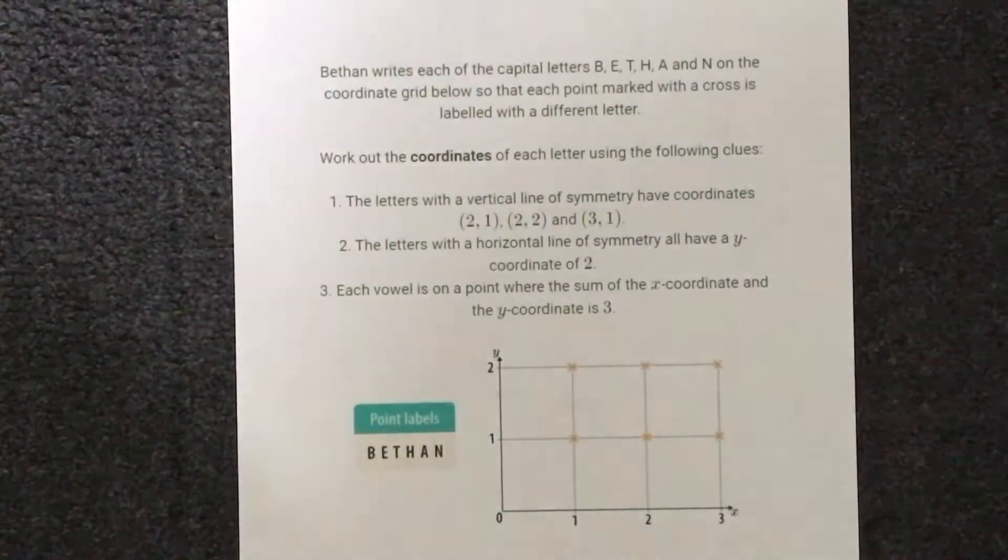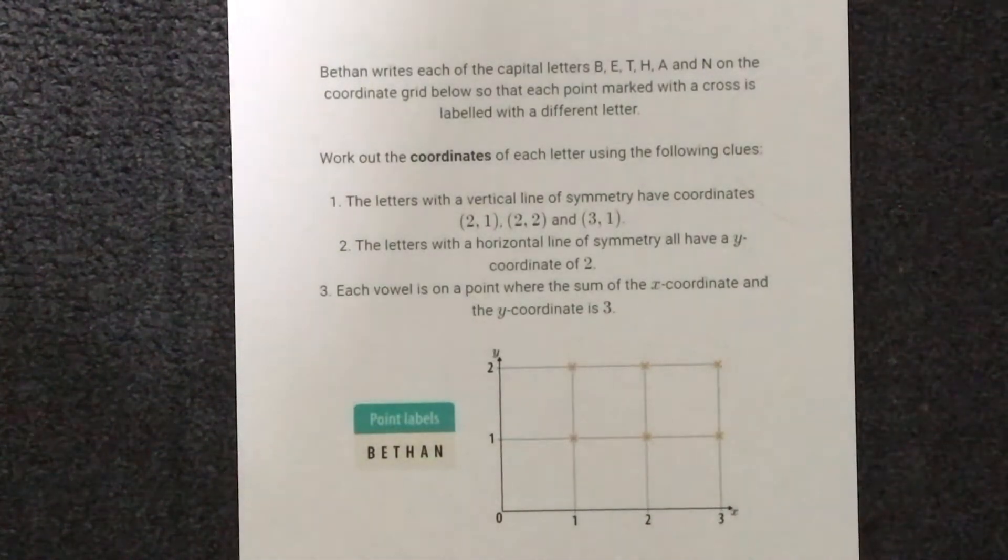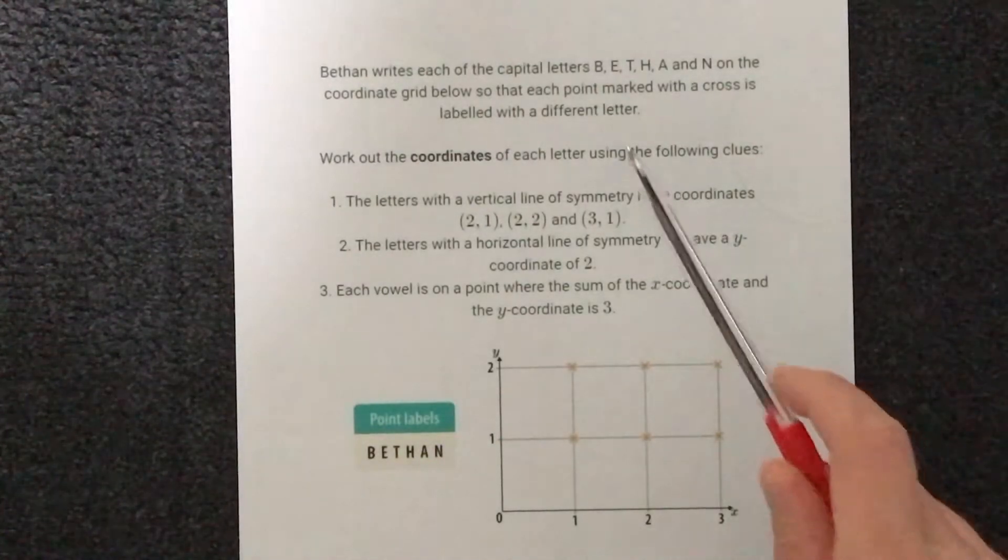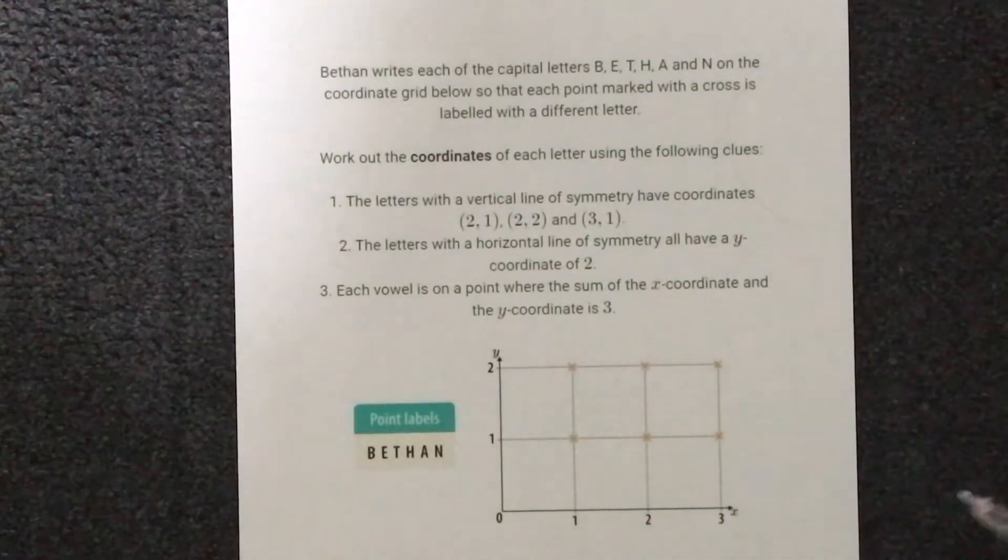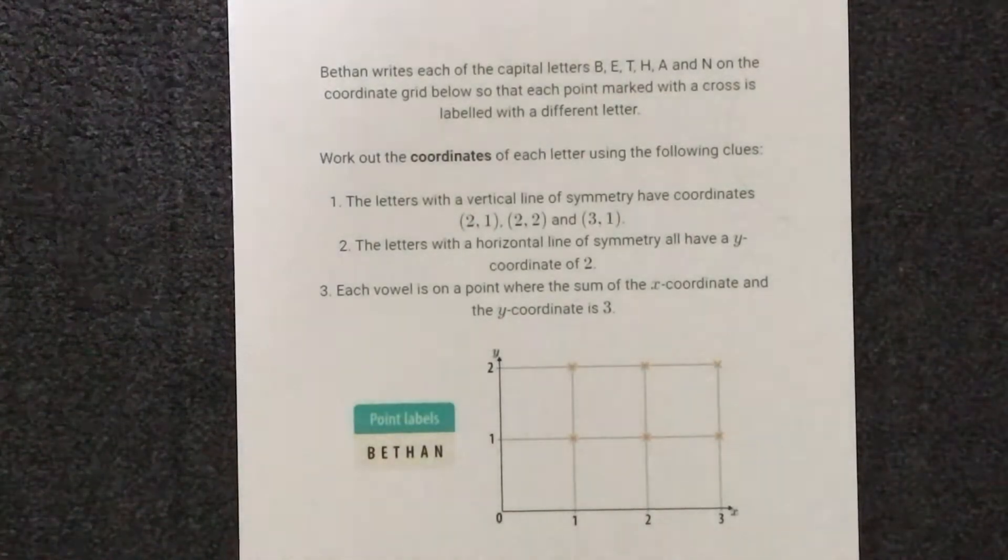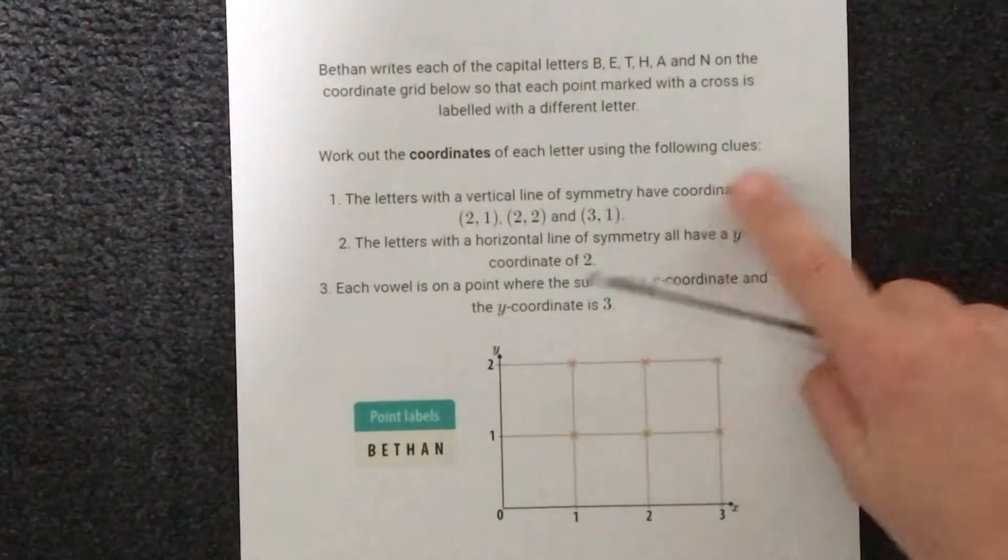In this video we're going to look at the Bethan question from Sparks. We're told that Bethan writes each of the capital letters B, E, T, H, A and N on the coordinate grid below so that each point marked with a cross is labeled with a different letter. We're asked to work out the coordinates of each letter using the three clues that we've been given.